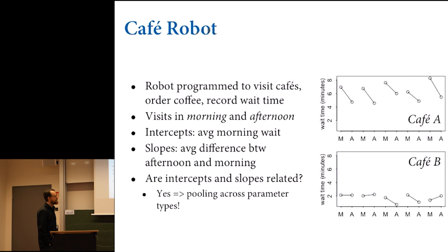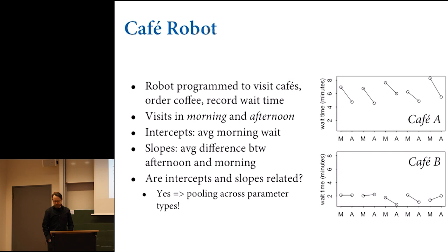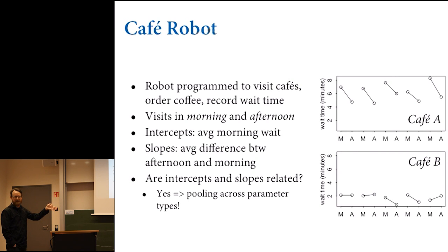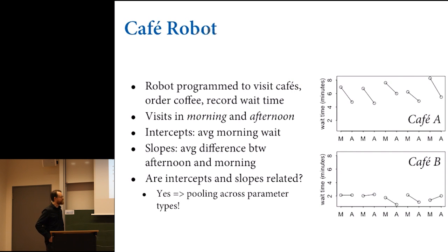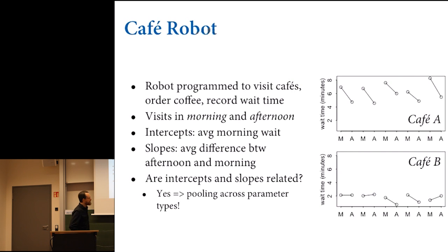Now we ask the robot to distinguish between morning and afternoon at cafes, because cafes tend to be busier in the morning than the afternoon. The average wait time in the morning is longer at most cafes. The robot keeps separate ledgers at each cafe. On the right side of this slide, I've given some synthetic data: two cafes called A and B, with wait time in minutes on the vertical axis and sequential visits — M for morning, A for afternoon — on the horizontal.